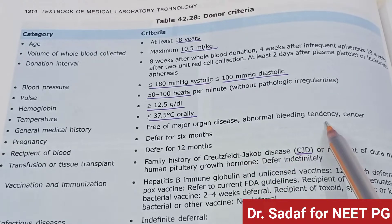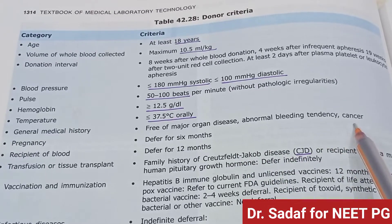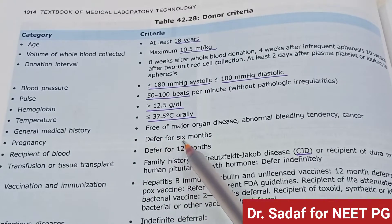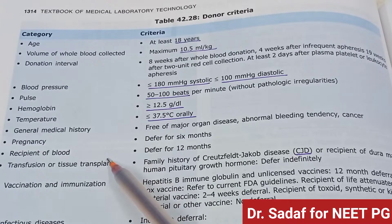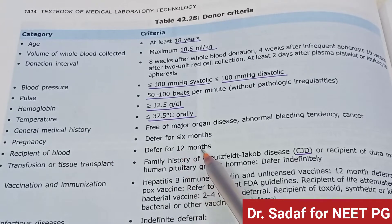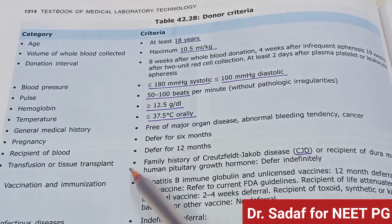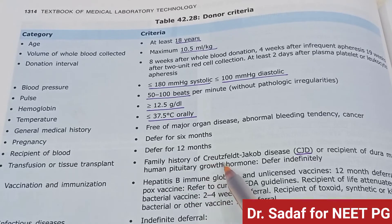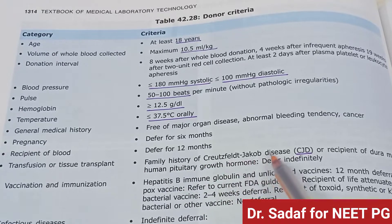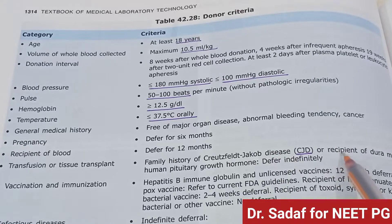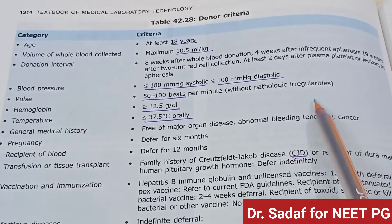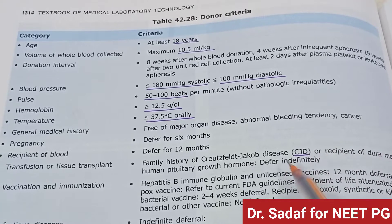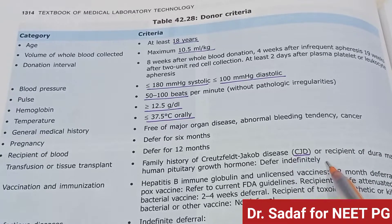There should be no abnormal bleeding tendency and no cancer. Pregnancy: defer for 6 months. Recipient of blood: defer for 12 months. Transfusion or tissue transplant — family history of Creutzfeldt-Jakob disease, or recipient of dura mater or human pituitary growth hormone: defer indefinitely.